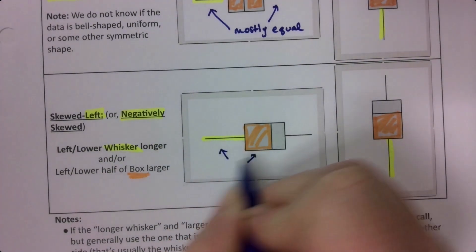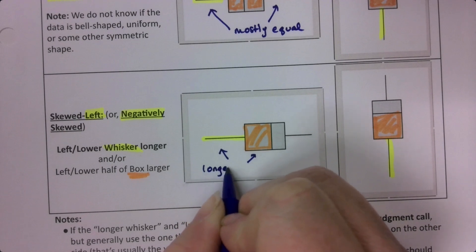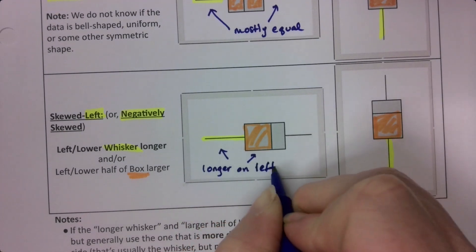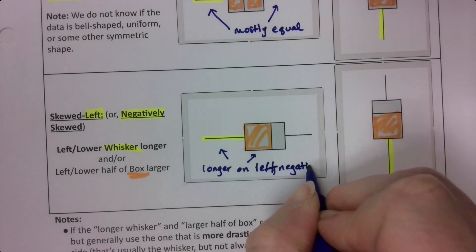And they'll be longer or larger on this side. So longer on the left, which we learn in math class, is the negative side. Because it's a number line. So left is negative. Right is positive.